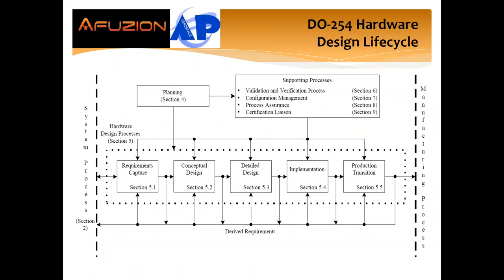Now the design lifecycle. Planning comes first — section 4 — then supporting processes: validation and verification. Verification: does implementation meet requirements? Validation: do we have the right, correct, complete, unambiguous, verifiable requirements? In our opinion, validation is more important — you need the good requirements before you can verify them. Then configuration management, process assurance — which is quality assurance plus supplier audits — manufacturing, production transition, and certification liaison. Then what looks to be the waterfall but it's not: requirements capture, conceptual design, detailed design, implementation, and production transition.